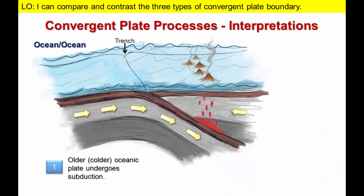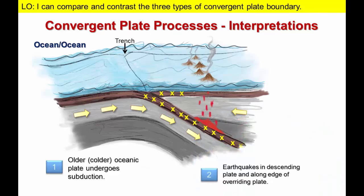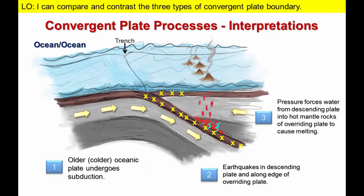Just like in the ocean-continent convergence, earthquakes occur in the descending plate and the rocks of the plate are compressed to squeeze out water, which enters the much hotter mantle rocks overlying the subduction zone and causes them to melt. The principal difference is that magma rising to the surface now forms an island arc rather than a volcanic arc and there are no associated mountains; otherwise the processes are similar.